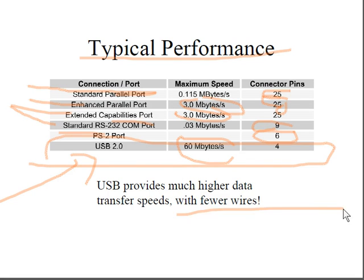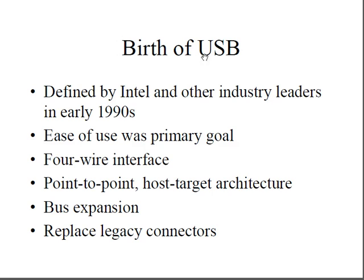USB provides much higher data transfer speed with fewer wires. USB 1.0 offered 12 Mbps, USB 2.0 was 480 Mbps, and USB 3.0 delivers up to several gigabits per second. This represented a dramatic improvement over all legacy connection standards.